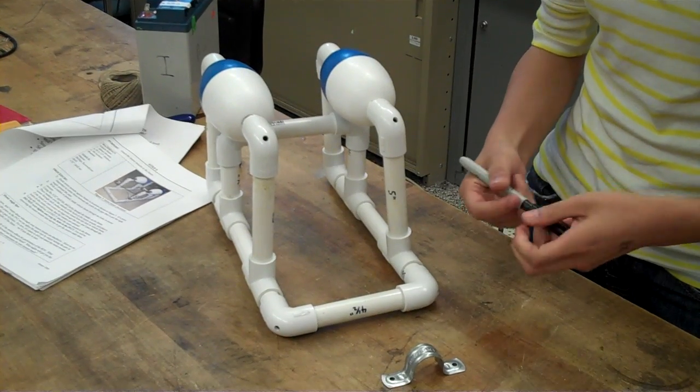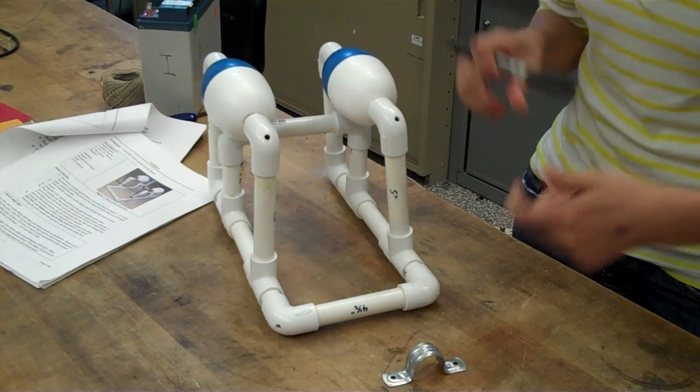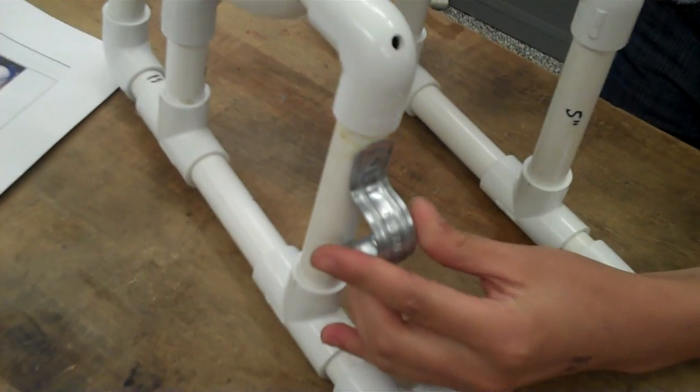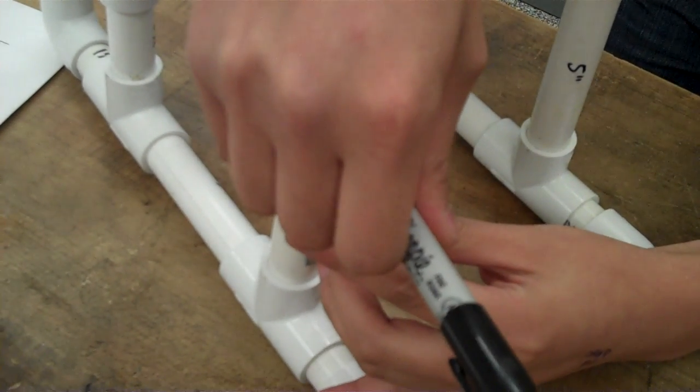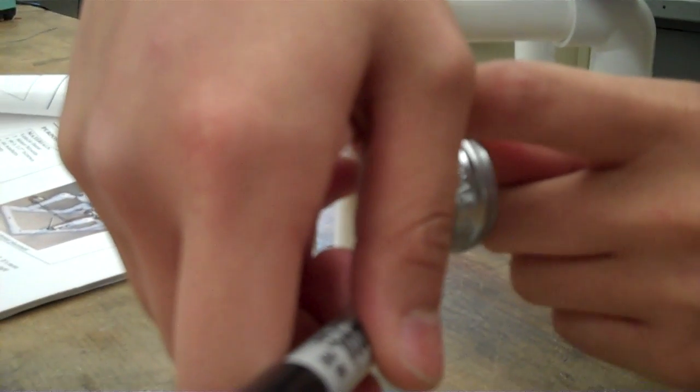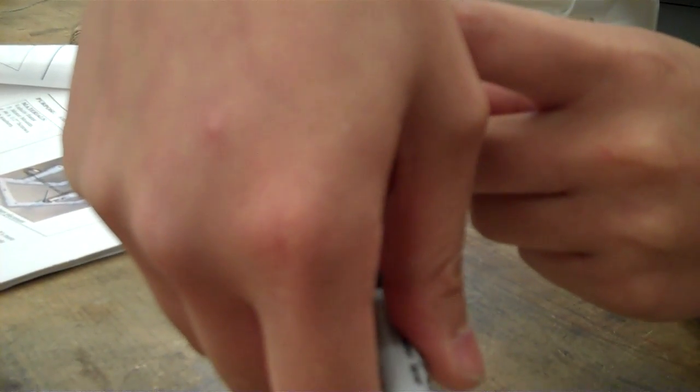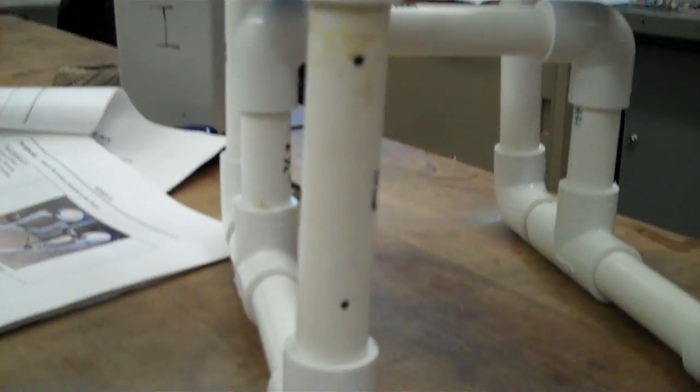Since we haven't made the motors, we're first going to mark where they're going to go by putting the motor mount in its position and drawing a dot on each side. And same on the other side.